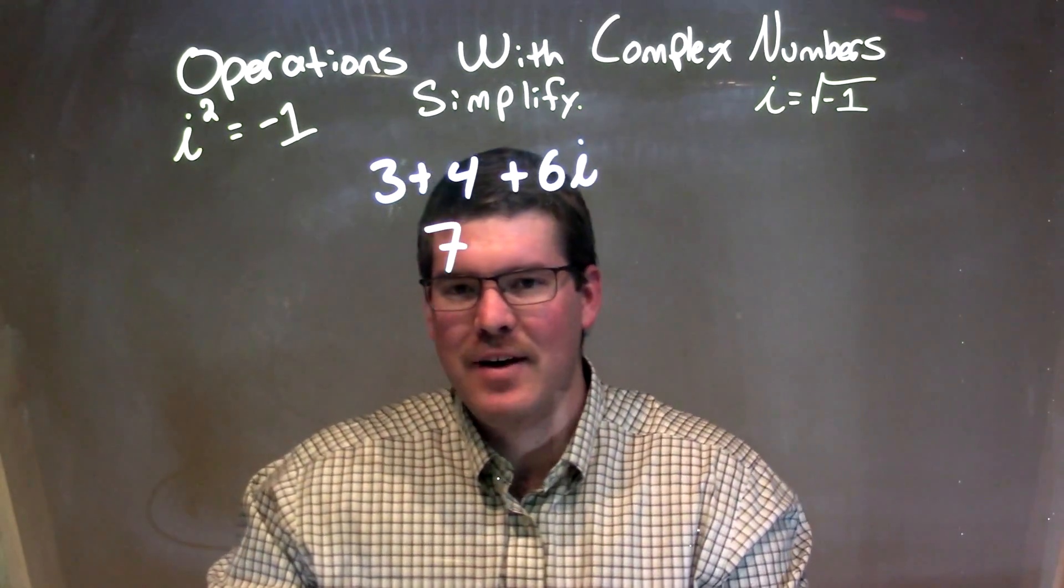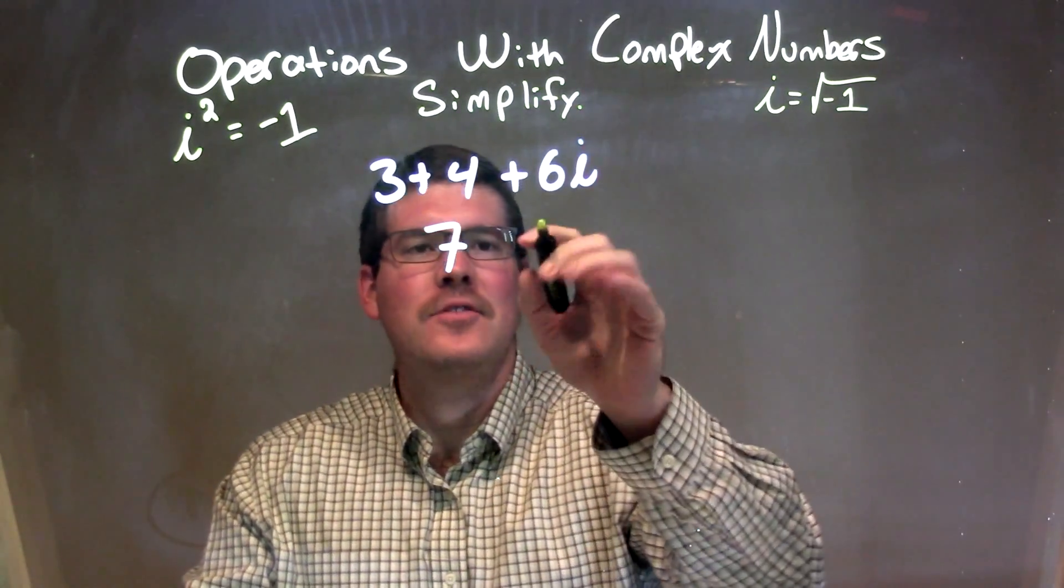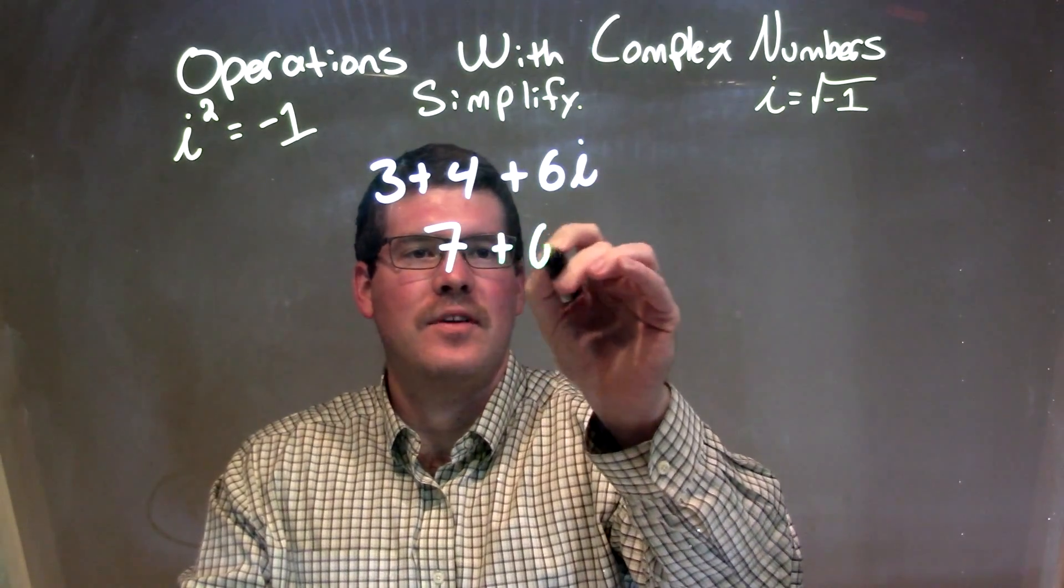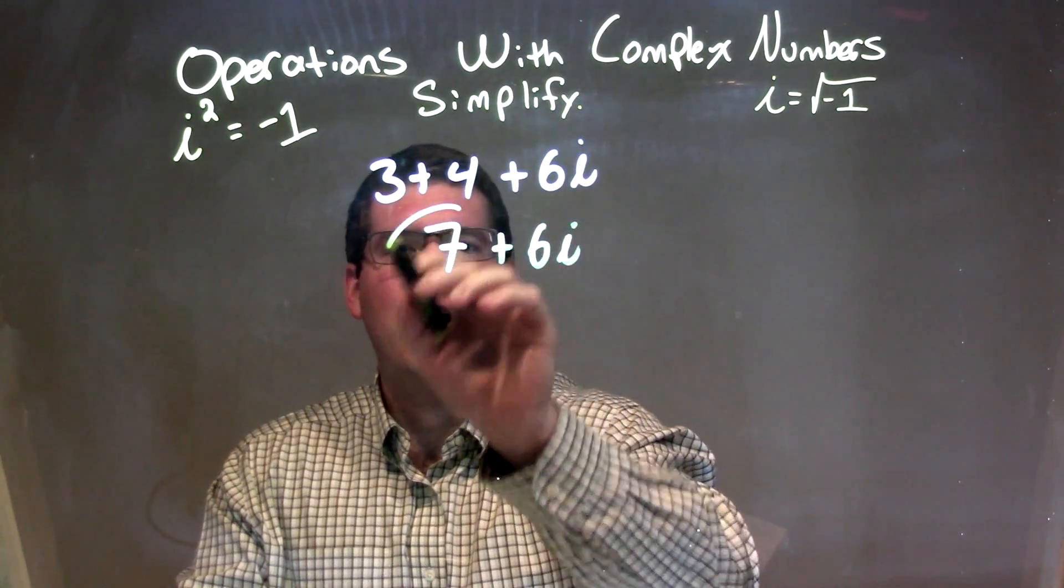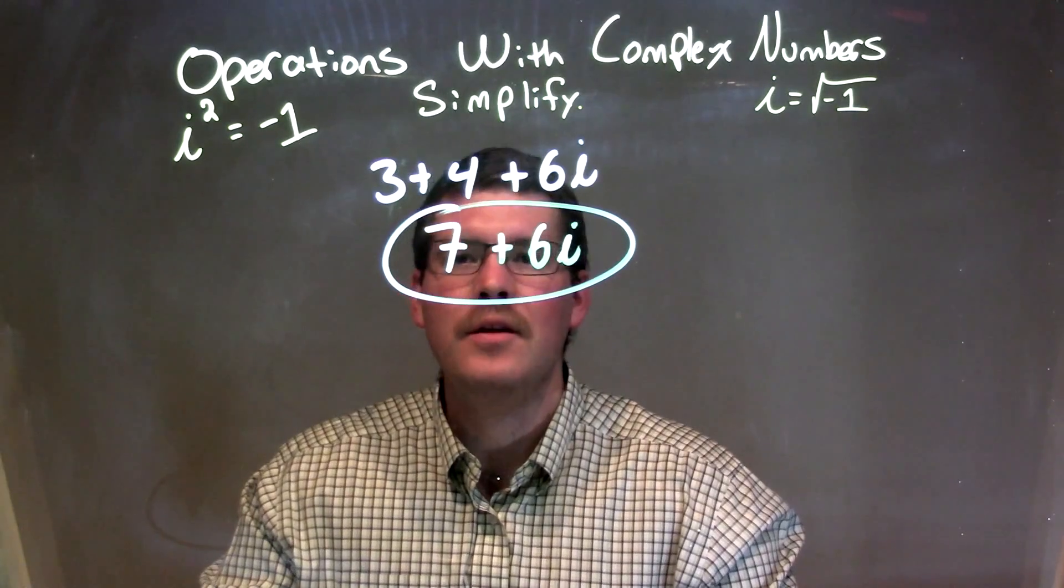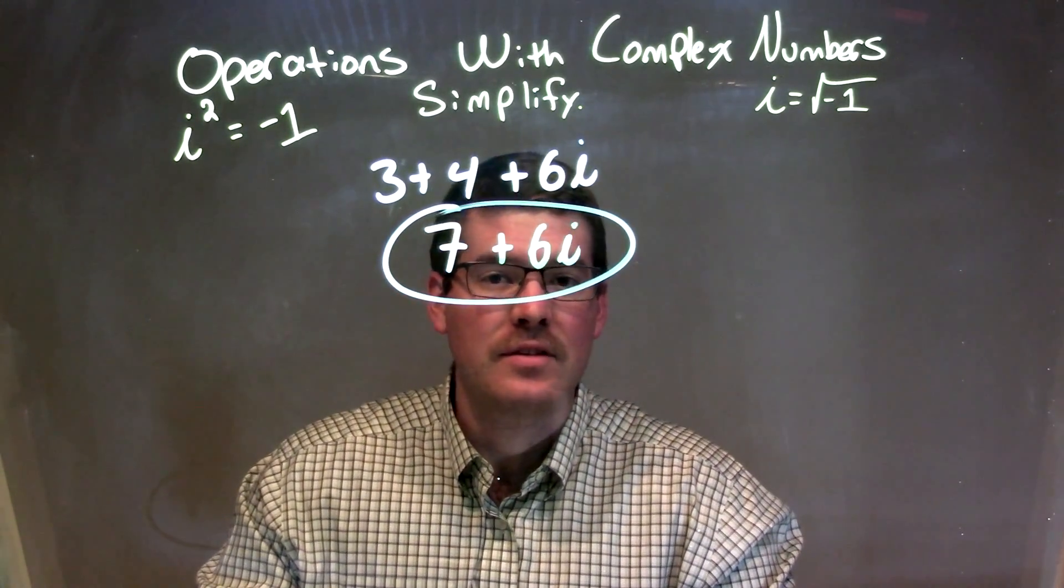6i doesn't have any other imaginary part to it, so we just have 6i there. Our final answer, our final complex number, is 7 plus 6i.